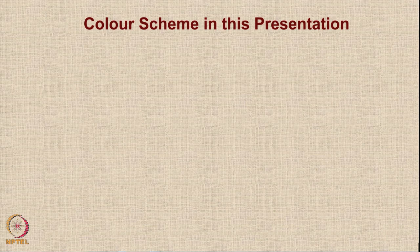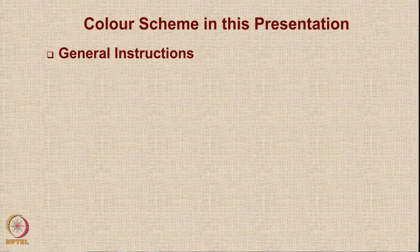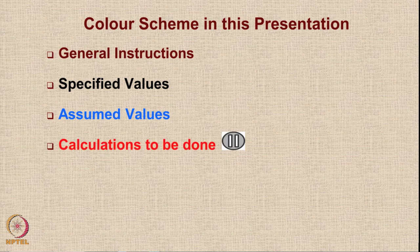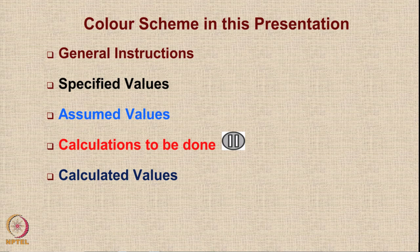Let us look at the color scheme in this presentation. The general instructions are given in brown color. Specified values are shown in black. Values assumed from existing literature or online sources are in light blue. Values that have to be calculated are shown in red with a special symbol — wherever you see this symbol, pause the video, do some calculations, then proceed. Calculated values are shown in dark blue. Comparison values with reported data are shown in green.